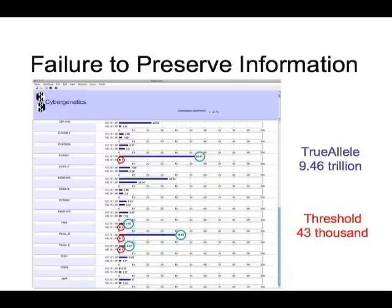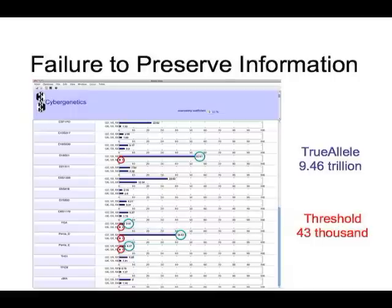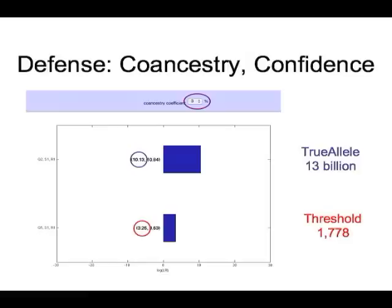Looking at every locus in this Pennsylvania case — on a linear scale, the top bar is TrueAllele and the bottom bar is what the lab reported — in red you see all the loci where they said nothing because the data with thresholds didn't match the suspect. A lot of information is being thrown out — 50, 35, 40 RFU peaks being treated as null events. The result: instead of reporting close to 10 trillion, they reported 43,000, which is why the prosecutor called us for this particularly vicious murder.